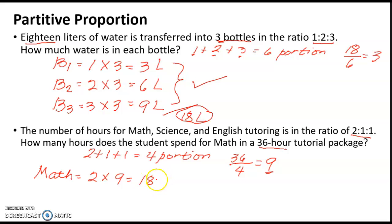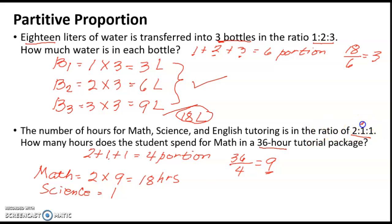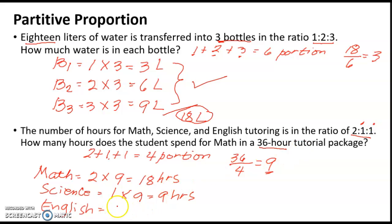For science, the ratio is 1, so 1 times 9 equals 9 hours for science. For English, the ratio is also 1, so 1 times 9 equals 9 hours. So the distribution is 18 hours for math, 9 hours for science, and 9 hours for English.